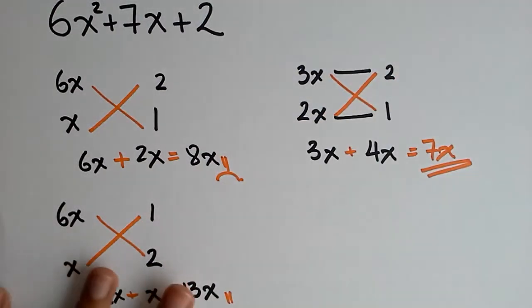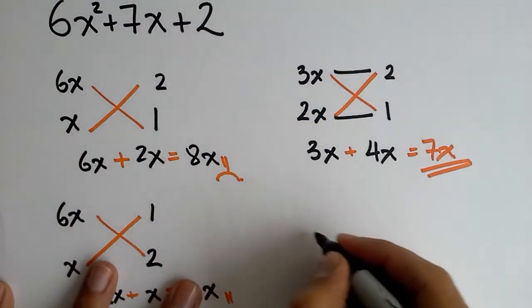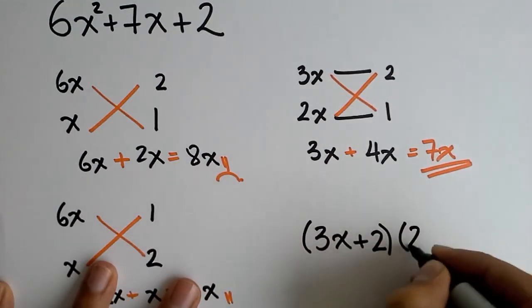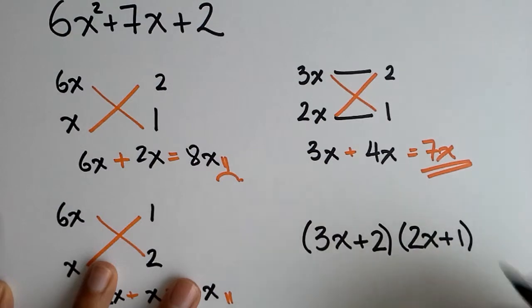Remember to build the parenthesis horizontally. Which means the solution would be 3x plus 2, 2x plus 1.